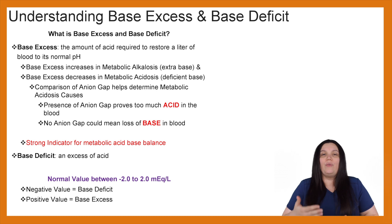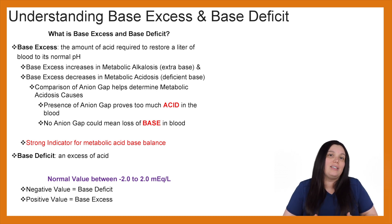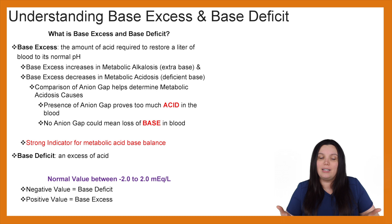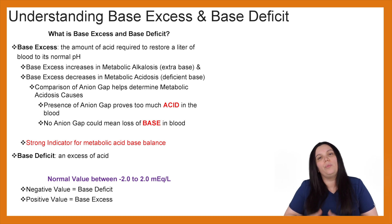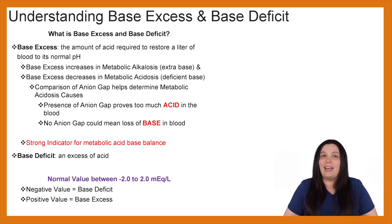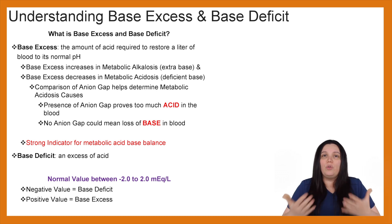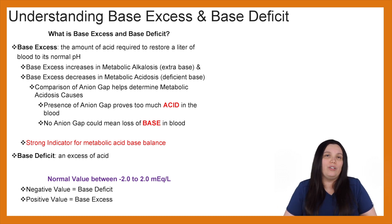If we have a more negative value, that means we're having some kind of base deficit. Whereas if we have a more positive value, then we really have a base excess. This value will help us determine how we're going to treat our metabolic patients.